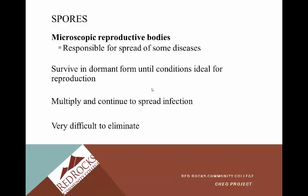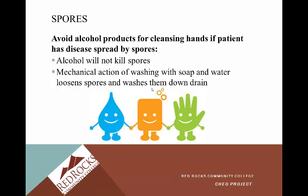Spores are microscopic reproductive bodies responsible for the spread of some diseases. The important thing to remember is that spores can live dormant until conditions are ideal for reproduction — they can remain dormant for a very long time and then come back and cause disease in humans. They can multiply and continue to spread infection, and they're very difficult to eliminate. Alcohol hand sanitizer does not kill spores; spores must be mechanically removed by hand washing. The mechanical action loosens the spores so they can be washed down the drain.